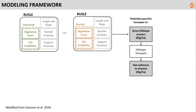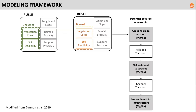We can then apply hillslope sediment delivery ratios from field-based research, essentially based on distance from stream. Pixels further from a stream network deliver a smaller proportion of their erosion to a stream because there's more potential for storage along the flow path. Once we apply those ratios, that gets us to potential post-fire increases in net sediment delivery to streams. We can also apply channeled transport and routing based on stream order and slope — larger, steeper streams have higher sediment transport efficiency — bringing us to potential post-fire increases in net sediment delivery to infrastructure such as reservoirs, intakes, and pipelines.